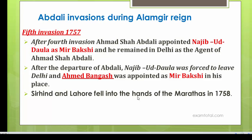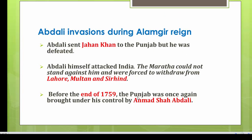After Abdali's departure, Najibu Dawla was forced to leave Delhi and Ahmad Bangesh was appointed Mir Bakshi in his place. Sarhind and Lahore fell into the hands of the Marathas in 1758, as Maratha power was increasing and they were capturing northern India. Abdali was upset by this interference and sent Jahan Khan to Punjab, but he was defeated. After that defeat, Abdali himself attacked — that was the fifth invasion.